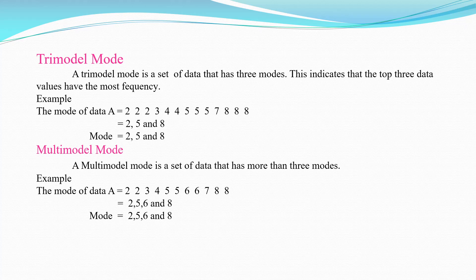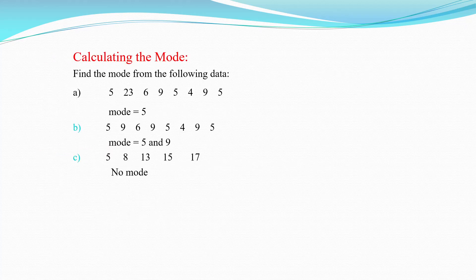A multimodal mode is a set of data that has more than three modes. Example: for data A, the repeated values are 2, 5, 6, and 8, so the mode is 2, 5, 6, and 8.